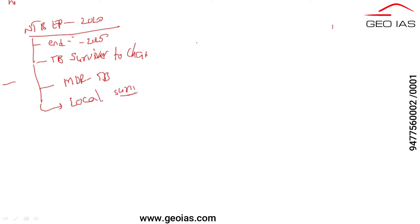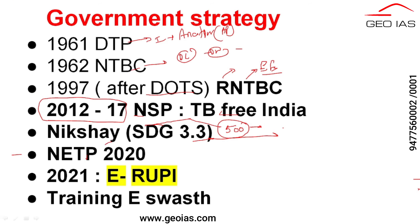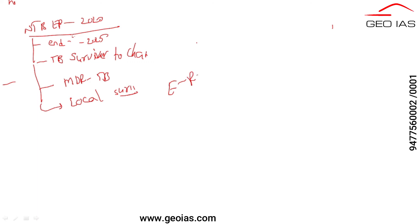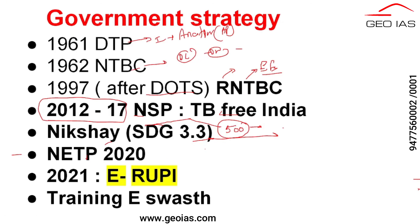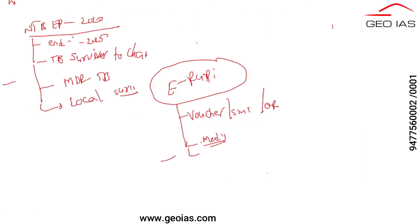They even launched a scheme to tackle multi-drug resistant TB and focused on local level surveillance against TB. In 2021, they also launched the eRupee concept - in this, they will provide you a voucher, SMS, or QR code. You go to a relevant area mentioned by the government and give this voucher, scan your QR code, or show this SMS, and they will provide you medicines. This is a way to reduce corruption and the diversion of medicines with respect to TB. They even started training social health workers to prevent and spread awareness about TB.